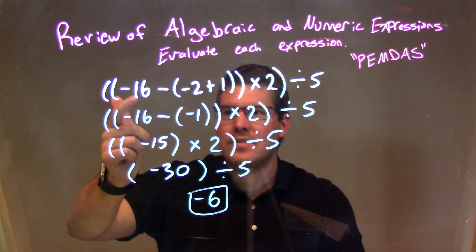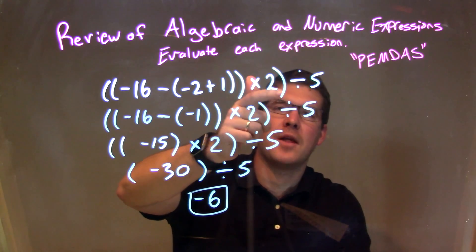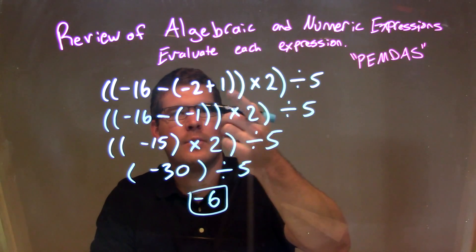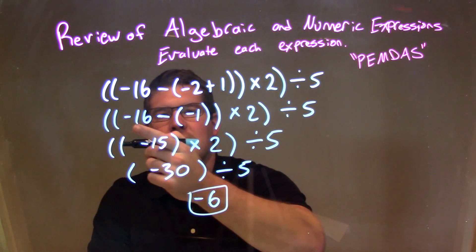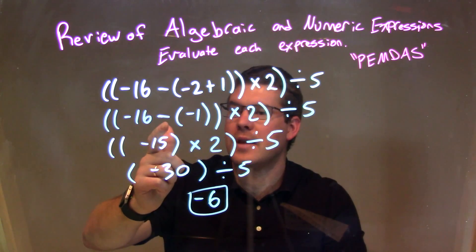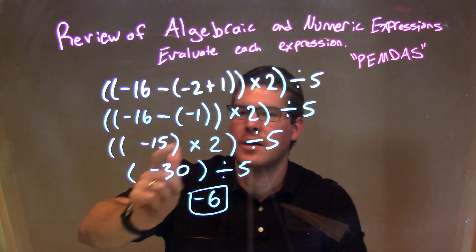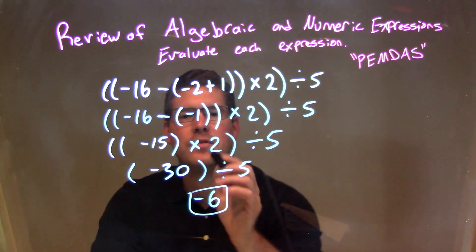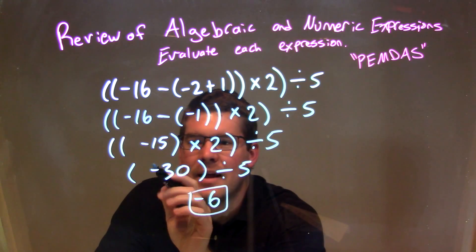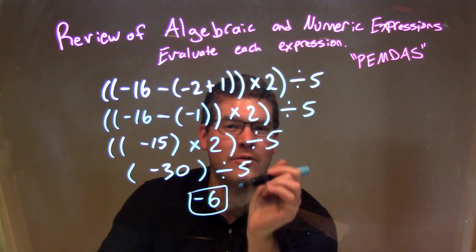Let's recap. We were given double parentheses, negative 16, minus another parentheses, negative 2 plus 1, double parentheses, times 2, another parentheses, divided by 5. Work from the inside out — the most inside parentheses is negative 2 plus 1, which is negative 1. Negative 16 minus negative 1: subtracting a negative is adding a positive, so that became positive 1, giving us negative 16 plus 1, which is negative 15. Then we multiply negative 15 times 2 to get negative 30. Finally, negative 30 divided by 5 gives us negative 6 — our final answer.